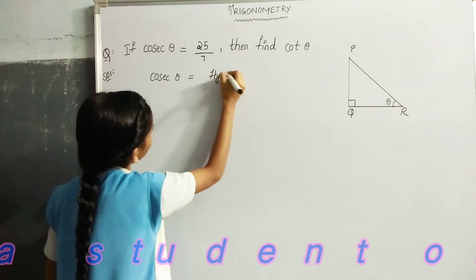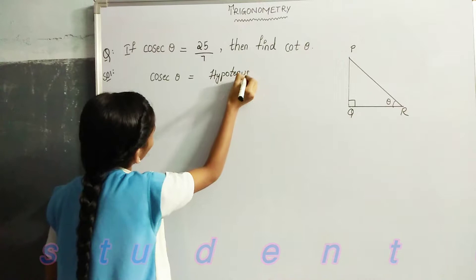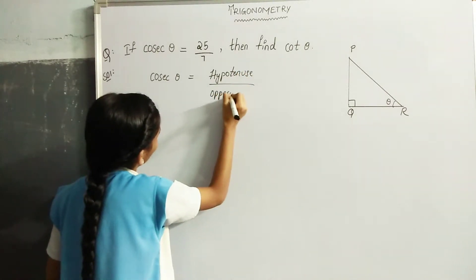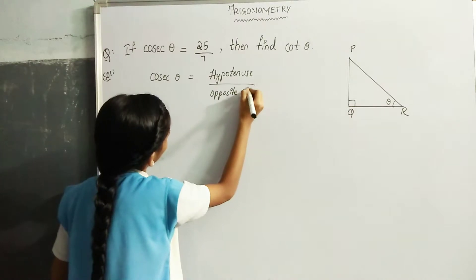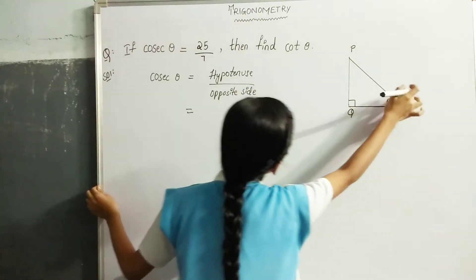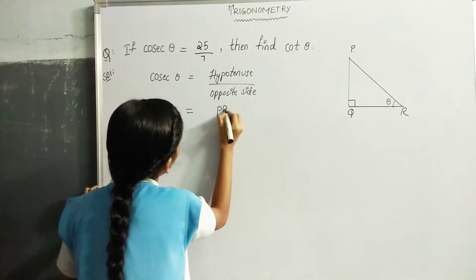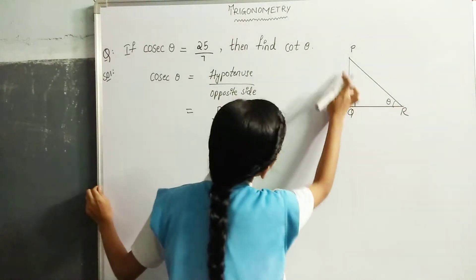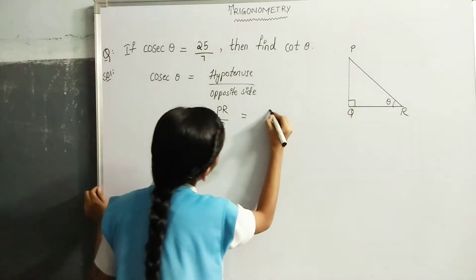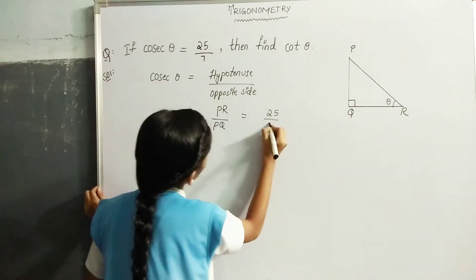hypotenuse by opposite side. Hypotenuse is PR and the opposite side is PQ. PR is 25 and PQ is 7.